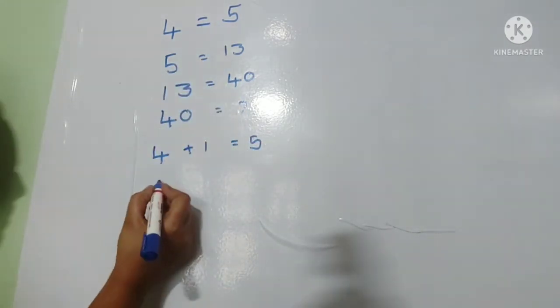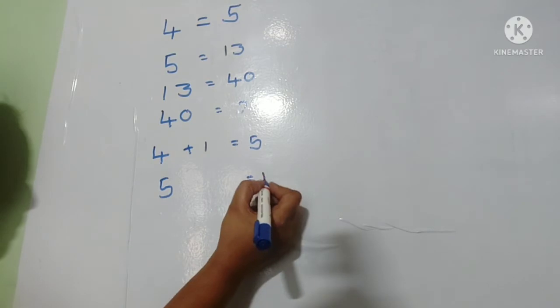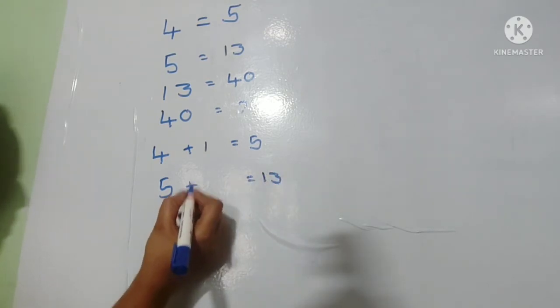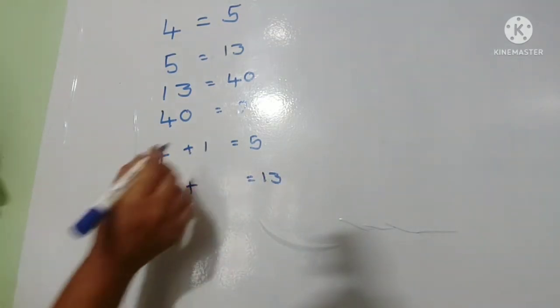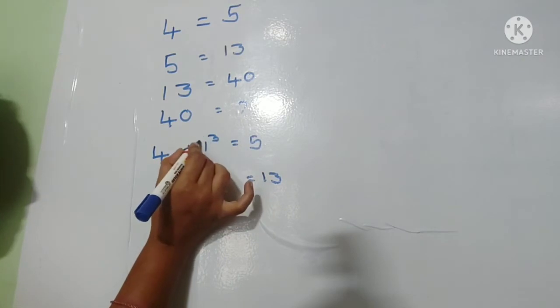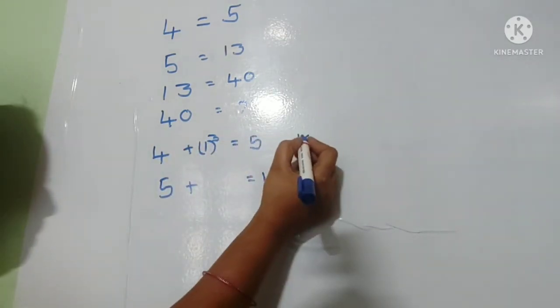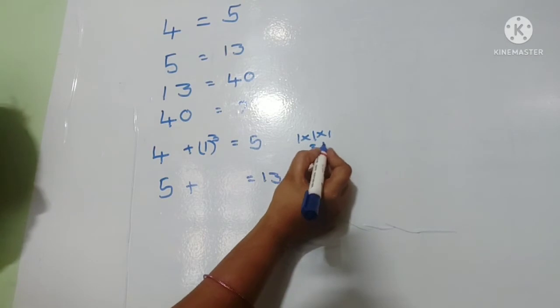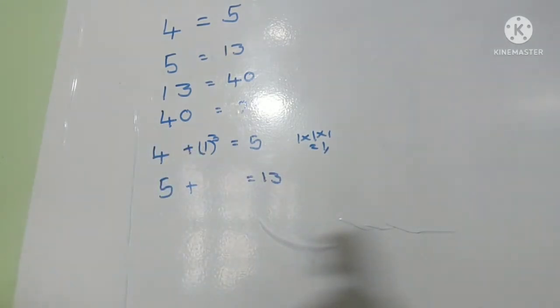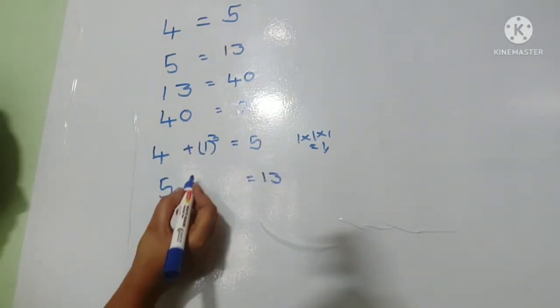Here, two ones means increase by one cube. One cube means one plus one cube means one times one times one equals one. Four plus one equals five. Thirteen like this friends.